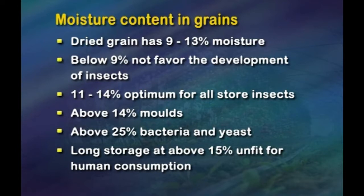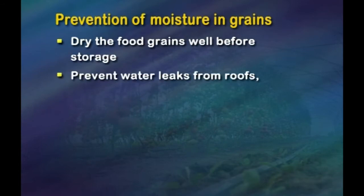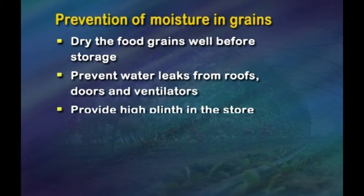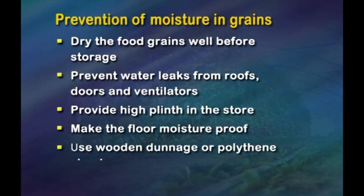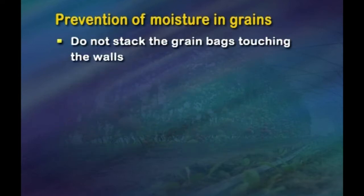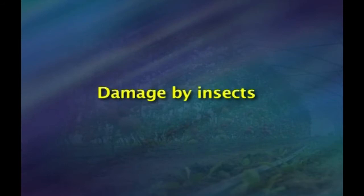Long storage at greater than 15 percent moisture makes grain unfit for human consumption. To prevent moisture damage, you need to: dry the food grains well before storage, prevent water leaks from roofs, doors and ventilators, provide high plinths in the store, make the floor moisture-proof, use wooden dunnage or polythene sheets, do not stack grain bags touching the walls, and do not open the stores for long periods during the rains.